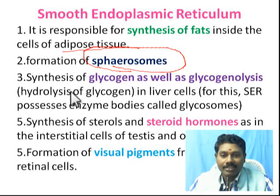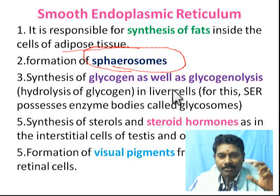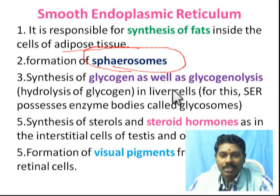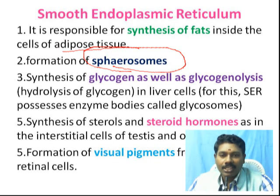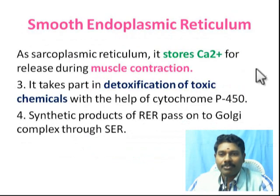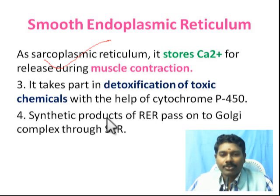Retinal cells like myoid cells have smooth ER because it is involved in the formation of visual pigments — vitamin A. In muscle cells, the smooth endoplasmic reticulum, also known as sarcoplasmic reticulum, is a storage site for calcium ions. Calcium plays a very important role in muscle contraction. Additionally, detoxification of toxic products is a very important role of smooth endoplasmic reticulum.